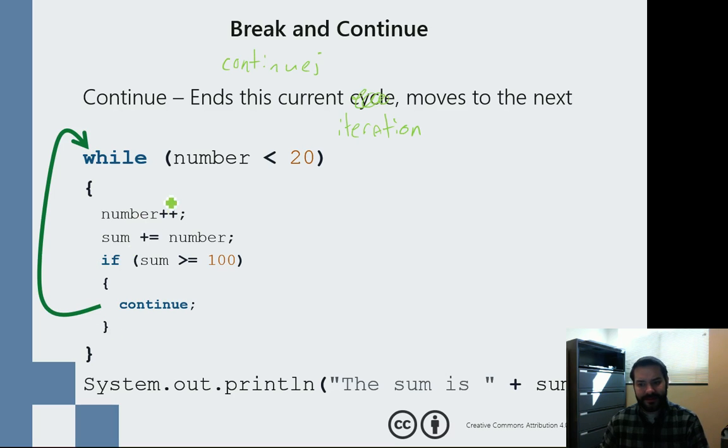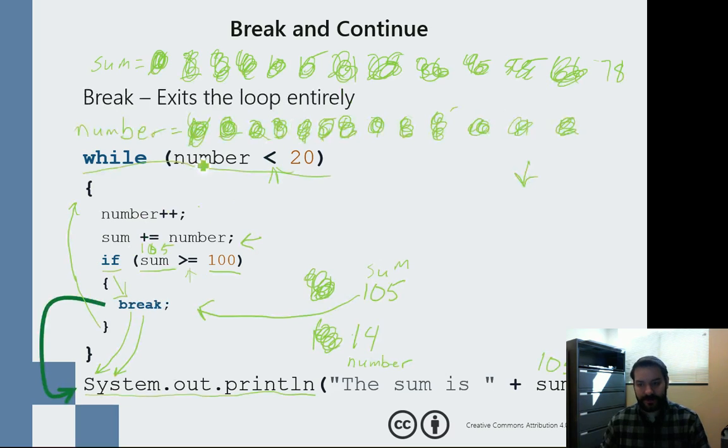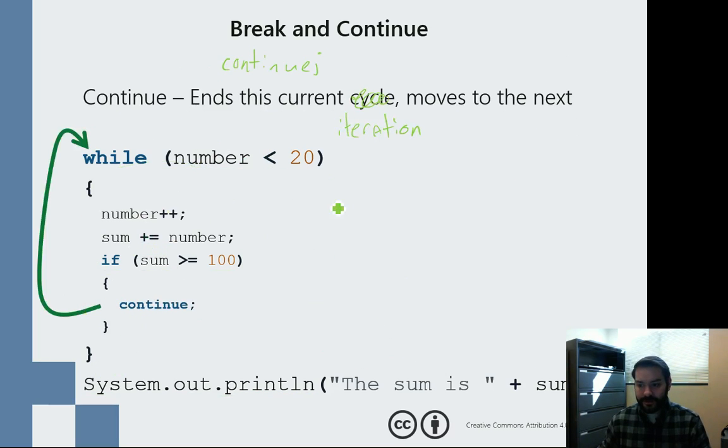All of a sudden, we do that same kind of structure here where suddenly number equals 14 and sum equals 105.